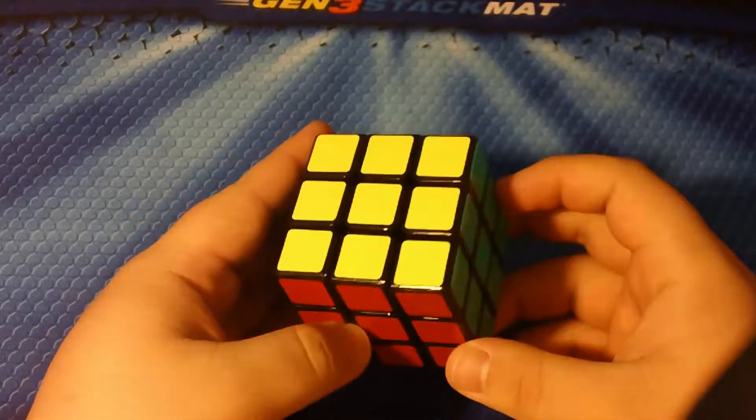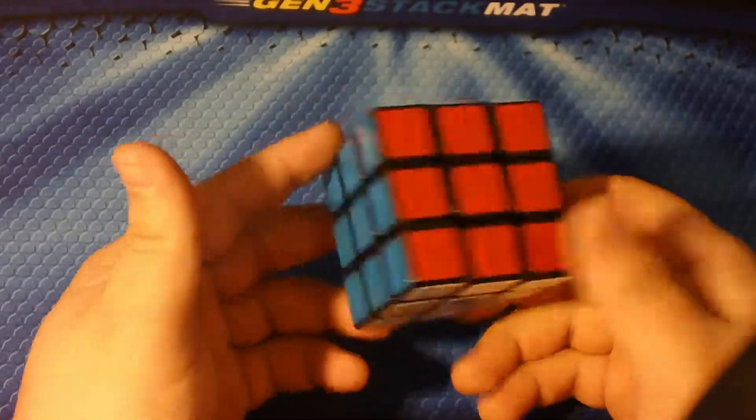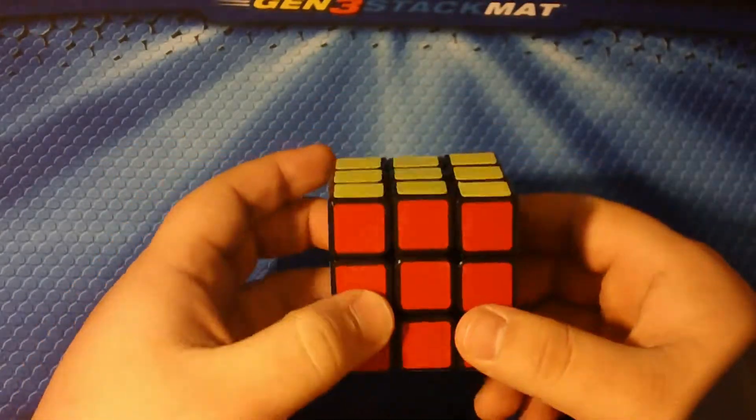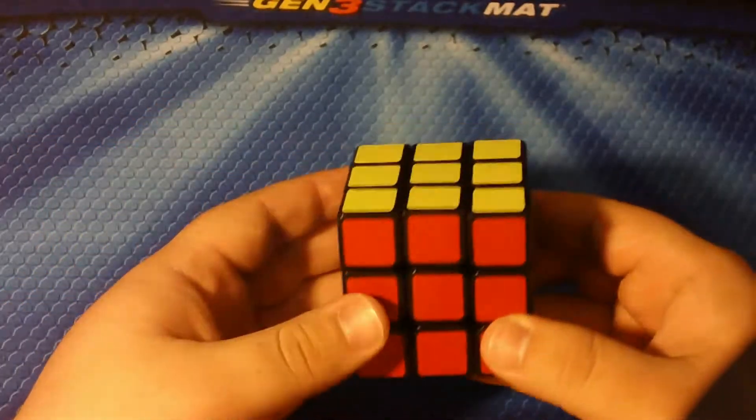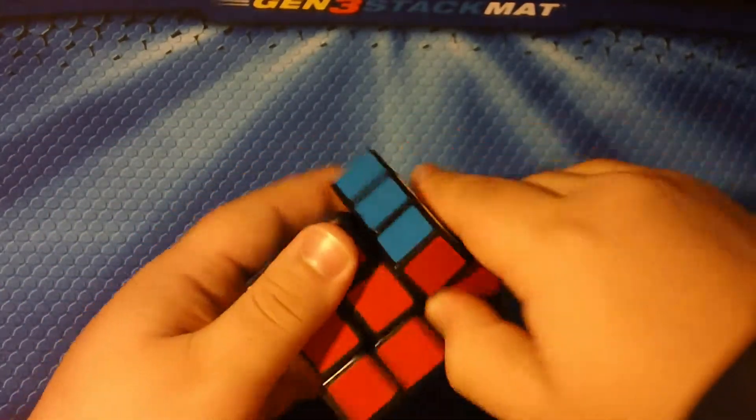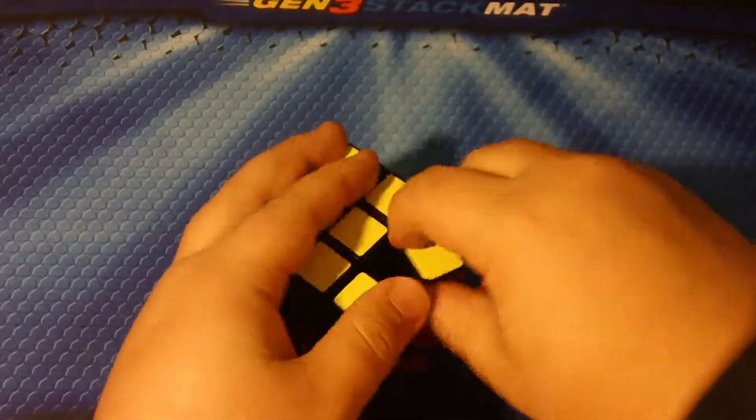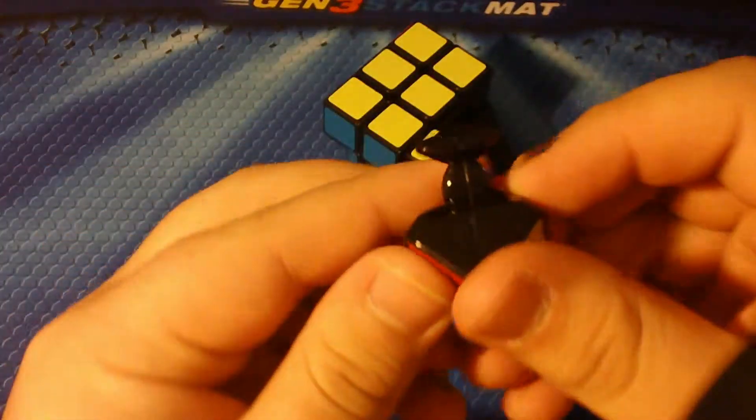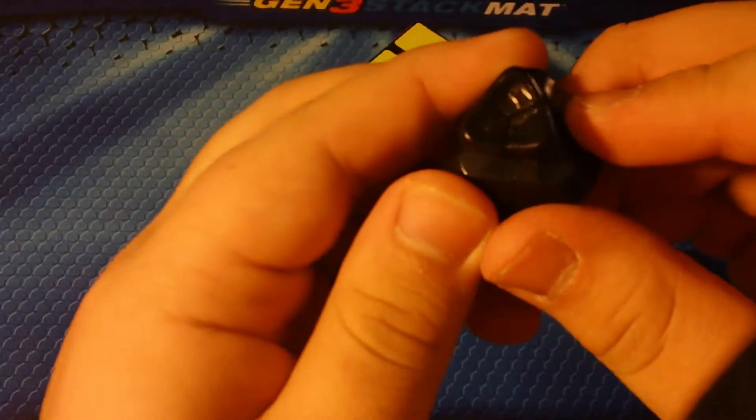This review is actually going to be really quick because the performance of it is pretty much identical to the Moyu Wei Long version 1. I mean the only notable difference with this cube and the version 1 is the 3-piece corner here, kind of like what Dayan does.